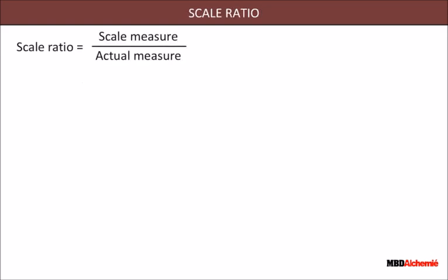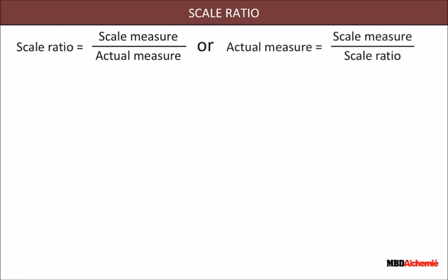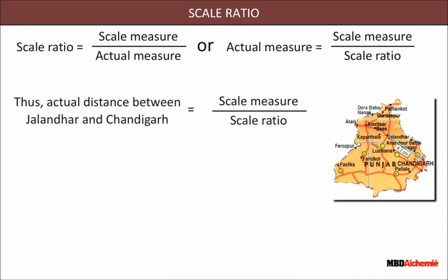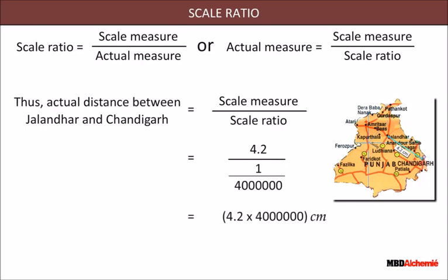Scale ratio: scale ratio equals scale measure divided by actual measure, or actual measure equals scale measure divided by scale ratio. Scale ratio is used to calculate the real dimensions of objects. Here the scale used to draw the map of Punjab is 1:40 lakhs, meaning one centimetre on the map represents 40 kilometres in reality. To find the actual distance between Jalandhar and Chandigarh, given it is 4.2 centimetres on the map: actual distance equals 4.2 divided by (1/40 lakhs) equals 4.2 × 40 lakhs centimetres equals 168 lakh centimetres equals 168 kilometres.